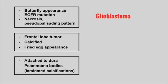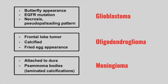Next is a tumor in the frontal lobe. It appears calcified and on biopsy has a fried egg appearance. This is an oligodendroglioma. Next is a tumor that's attached to the dura and has psammoma bodies on biopsy. This is a meningioma. This tumor can appear as if it's outside the brain because it's attached to the dura, which is the meninges.